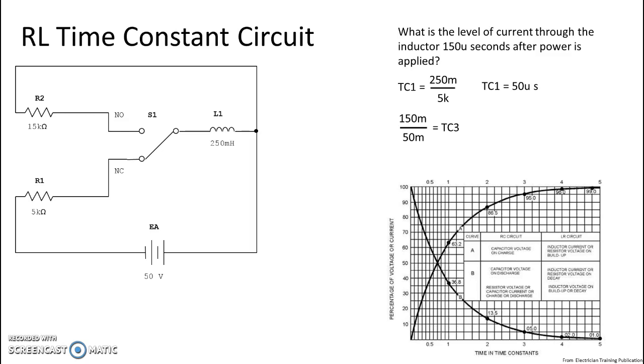So we need to know total current to find out a portion of current. So we're going to start with that. We're going to take our 50 which is our applied voltage and divide it by the resistance in the operating portion of the circuit, which is 5k.